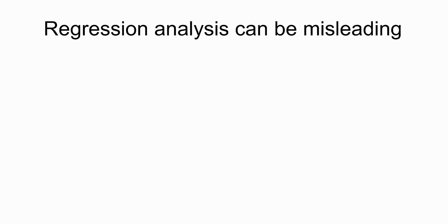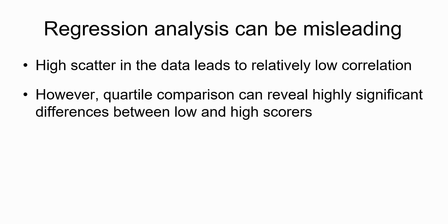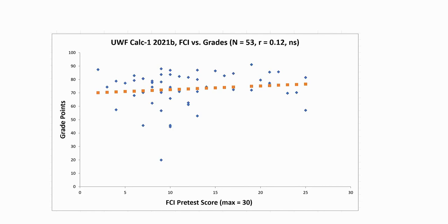I want to point out that regression analysis can be very misleading here. There's a lot of scatter and low correlation, so you don't see some of the results you see when you do a quartile comparison. For example, take a class at the University of West Florida: grade points as a function of FCI pretest scores, 53 students. The correlation coefficient is only 0.112 — not even significant. But that's not the whole picture.